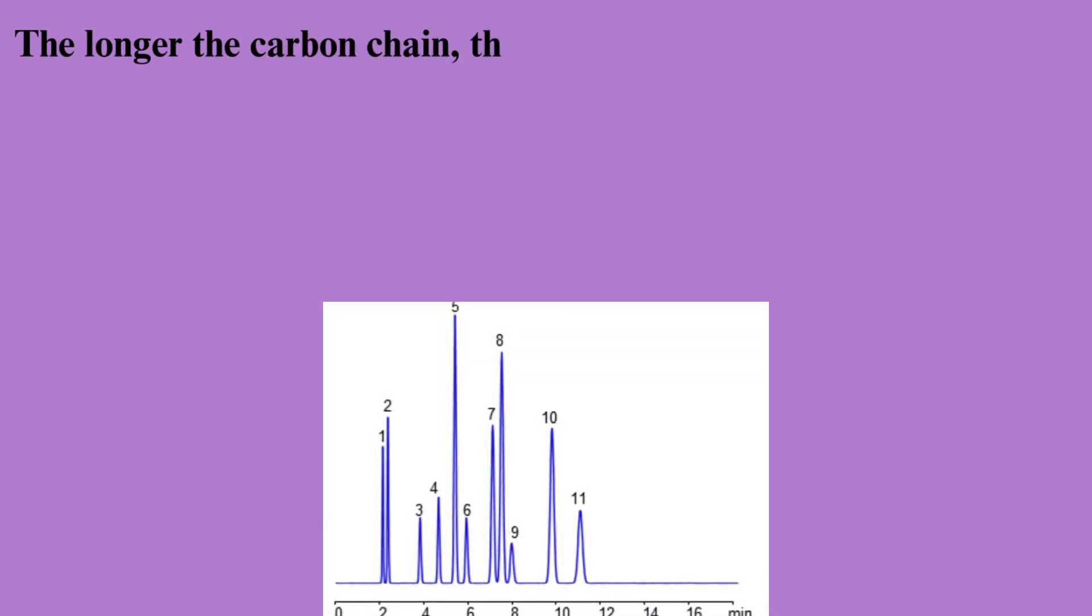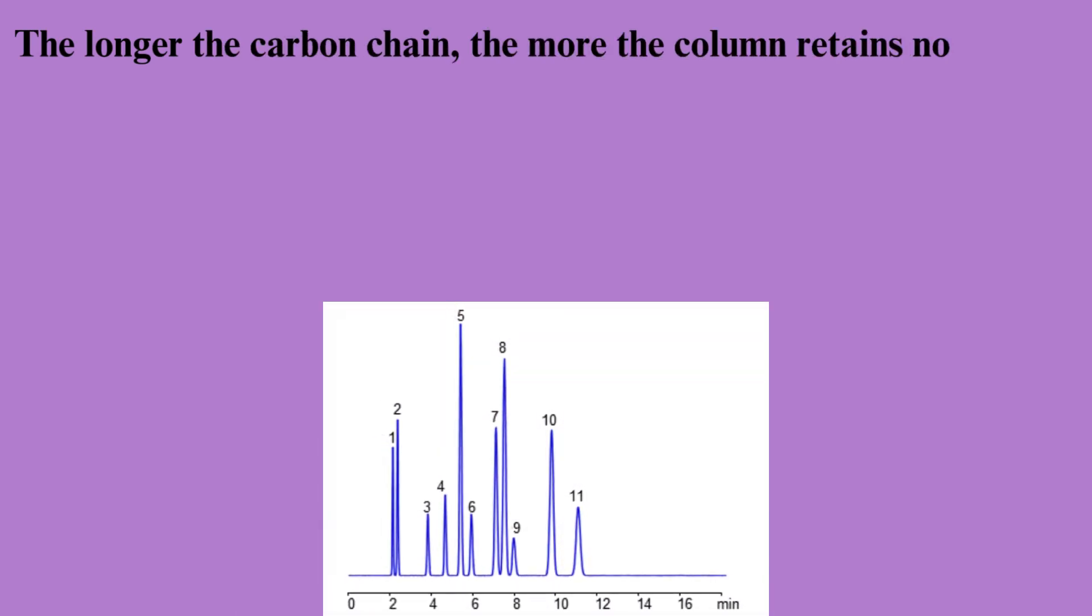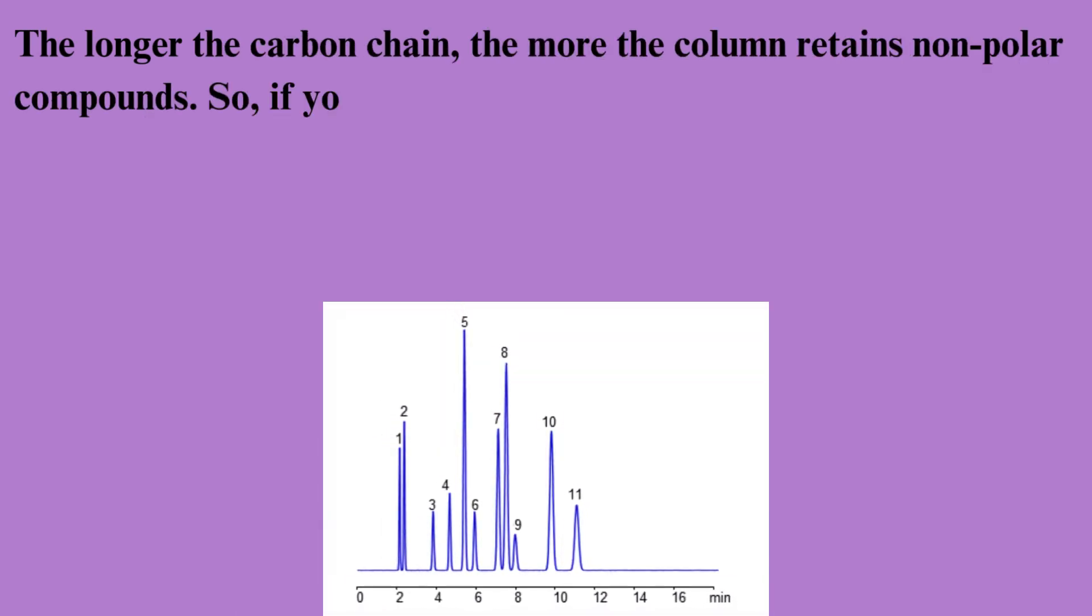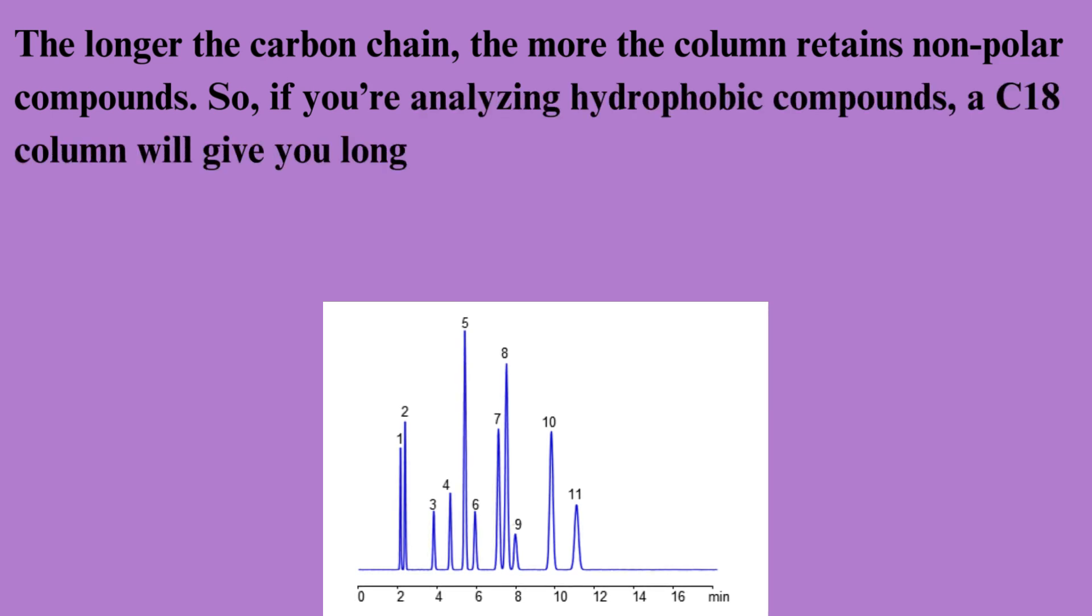Now, let's break this down. The longer the carbon chain, the more the column retains non-polar compounds. So if you're analyzing hydrophobic compounds, a C18 column will give you longer retention times and better separation.